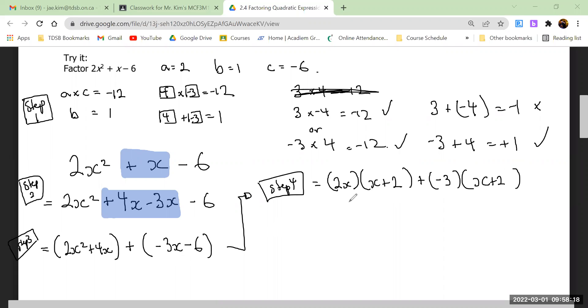Can you factor out from negative 3x minus 6? Not just three but a negative three. Try to keep the x value positive. Look at those two brackets that you made. What do you notice if you're doing this right?